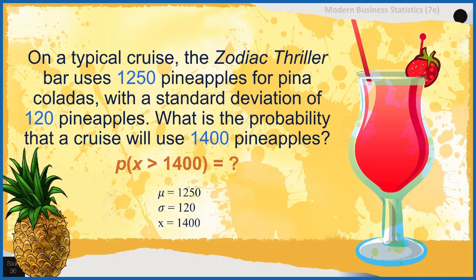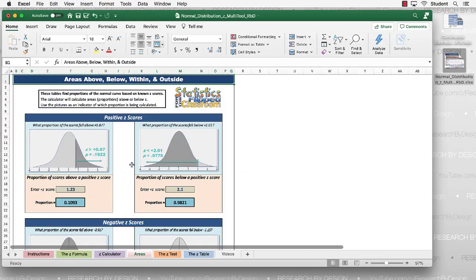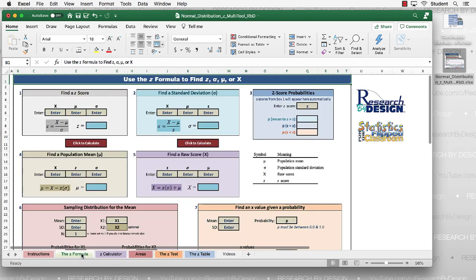Let's do an example. On a typical cruise, the bar goes through 1,250 pineapples for piña coladas — there is a lot of food consumed on a typical cruise with 4,000 people for a week. The standard deviation for the number of pineapples is 120. What is the probability that a given cruise would use 1,400 pineapples? We have a mean of 1,250, a standard deviation of 120, and a raw score of 1,400. Go to the Z formula tab and use box 1 for this example.